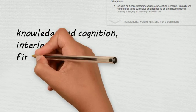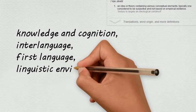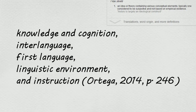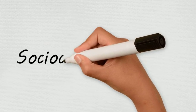These are knowledge and cognition, interlanguage, first language, linguistic environment, and instruction. With this in mind, the topic of this episode will focus on sociocultural theory of second language acquisition.